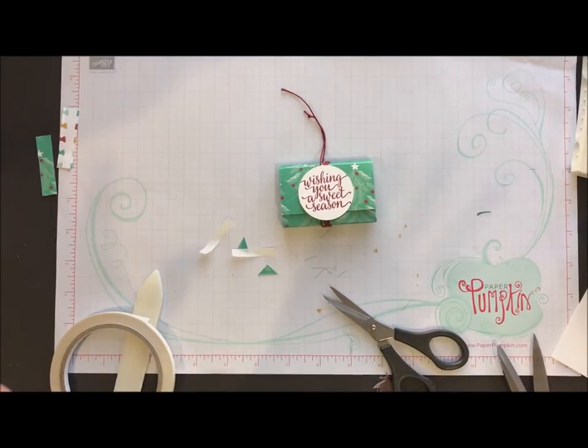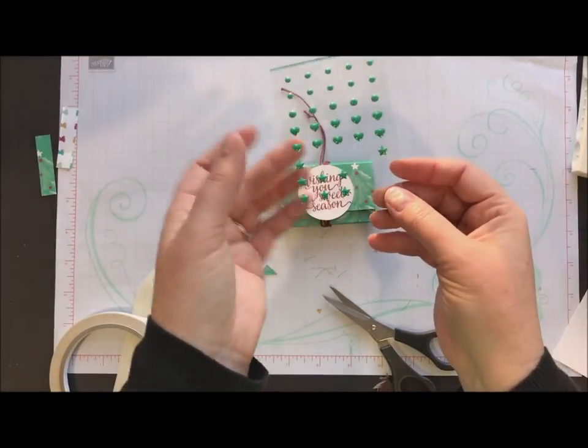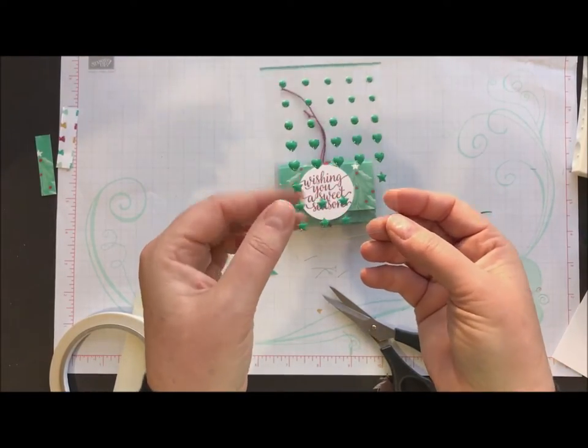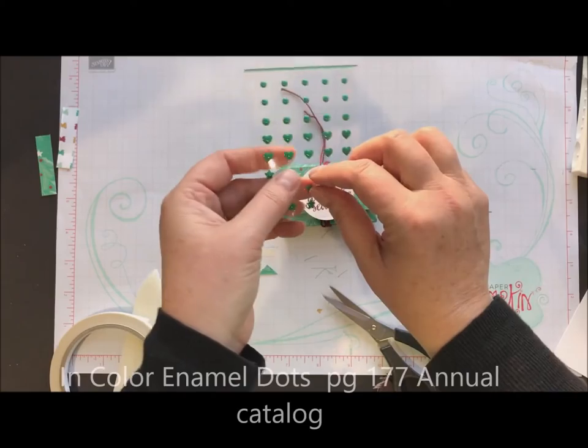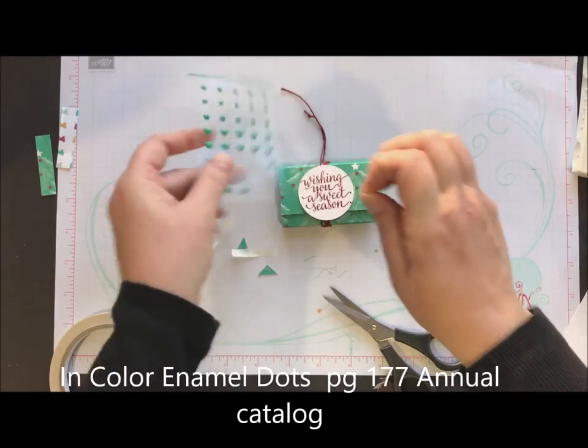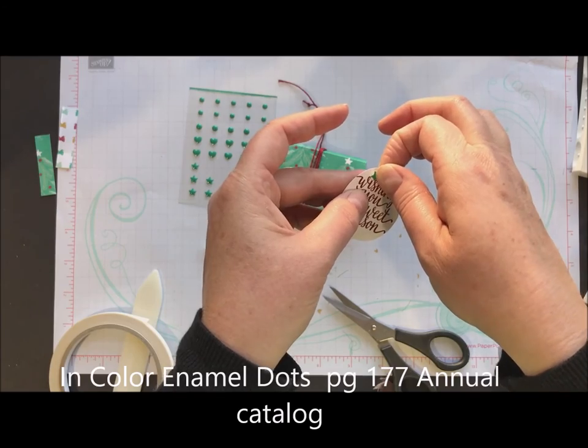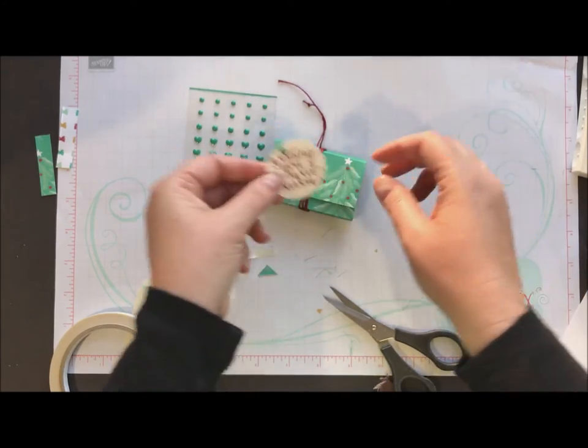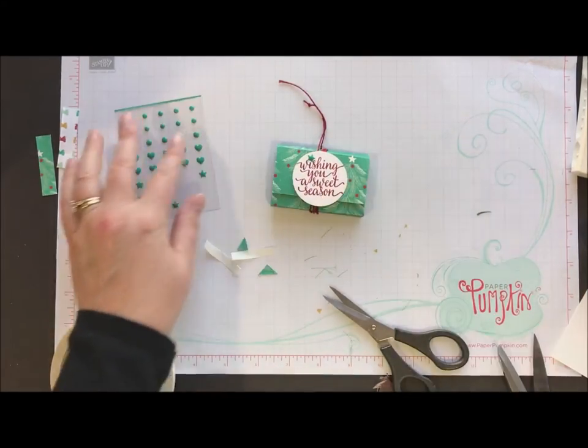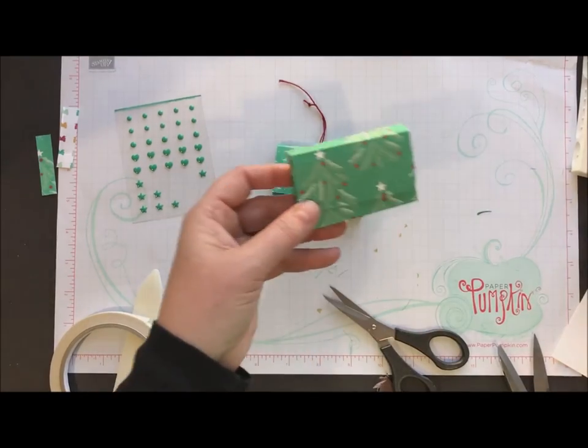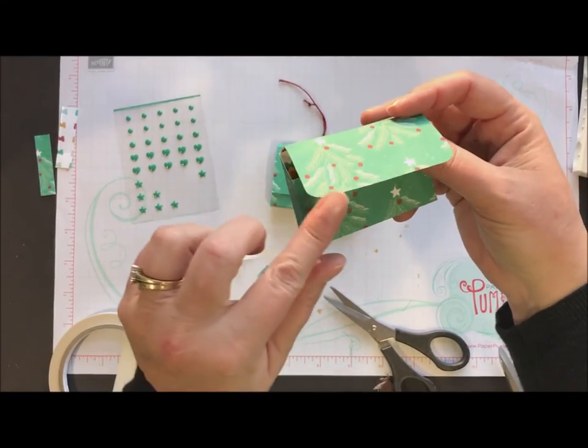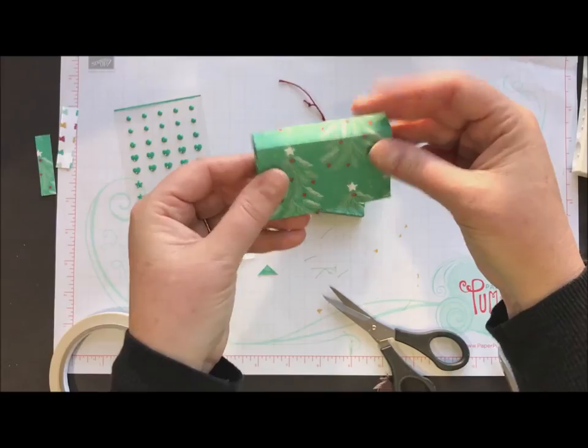And then the final little cute touch is our enamel dots. And I just took a little enamel dot in emerald envy. Put that right on the little star in wishing you. And then that would attach right there. And you'd have your little box. So see how I did the corner rounder there and it turned out really cute. Okay.